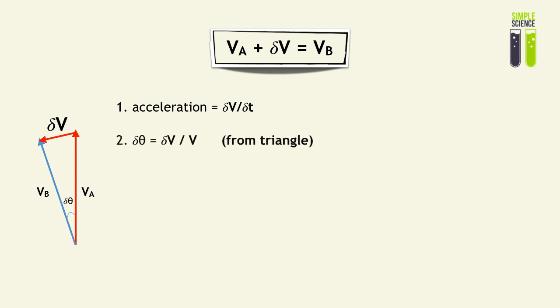From this triangle, we can see that for a very small angle, delta theta, it is equal to delta V, the top vector, divided by V. That is VA, basically. And when we rearrange, we get delta V is equal to V delta theta. When we substitute delta V into the number two formula, we get acceleration is equal to V delta theta, all of it over delta T.